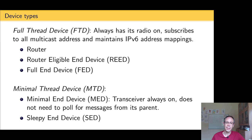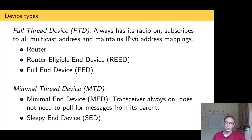Full Thread Devices subscribe to all multicast addresses and maintain IPv6 address mappings. Typical devices are: Router, Router-Eligible End Device (REED), and Full End Device. Then there are Minimal Thread Devices (MTD): a Minimal End Device which always has the transceiver on so it doesn't need to poll messages from its parent, and a Sleepy End Device which can turn off the transceiver but must ask its parent for messages when it wakes up — so the parent must store messages while it sleeps.